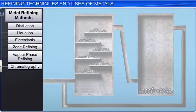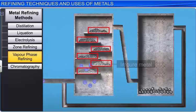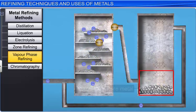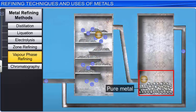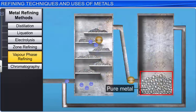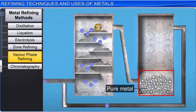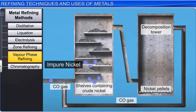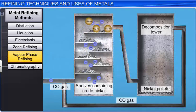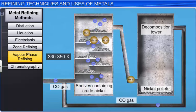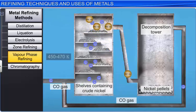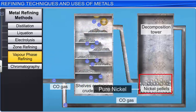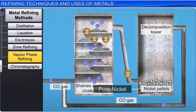In another refining technique known as vapor phase refining, the impure metal is first converted into its volatile compound, which is then decomposed to give pure metal. It is essential that the volatile compound of the metal should be easily formed and easily decomposed. For example, nickel reacts with carbon monoxide to form a volatile nickel tetracarbonyl complex at a temperature of 330 to 350 Kelvin. The nickel tetracarbonyl is then heated to 450 to 470 Kelvin, where it decomposes to give pure nickel and carbon monoxide. This method is known as the Mond process for refining nickel.